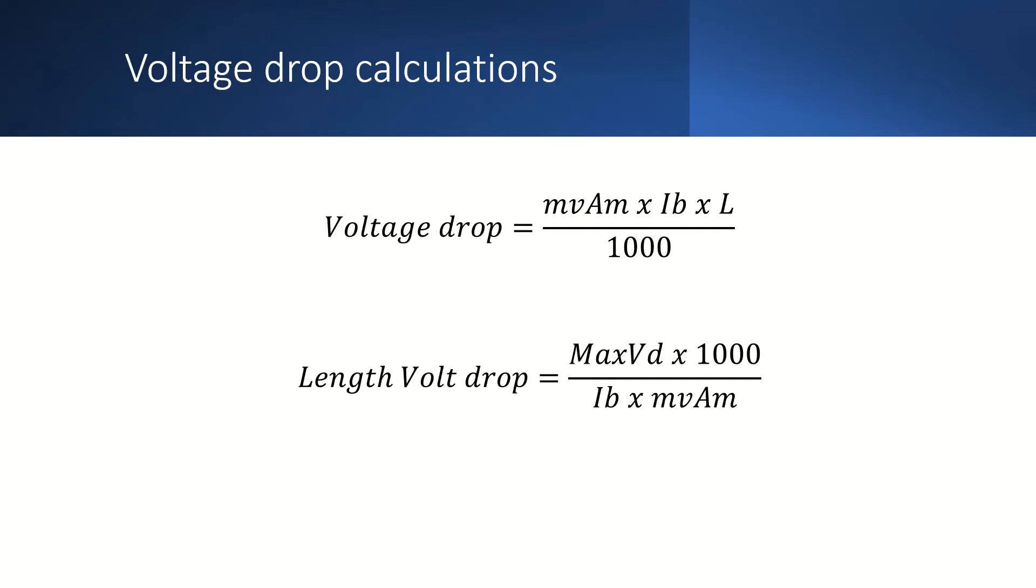So here we have the volt drop calculation from the on-site guide. The volt drop can be calculated by multiplying the value of millivolts per ampere per meter by the design current and the length and then dividing by 1000.